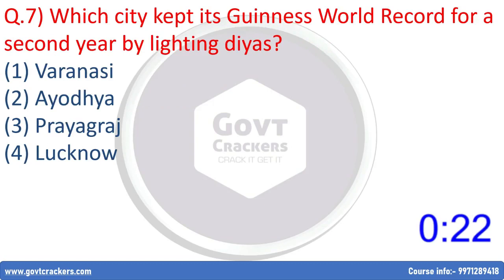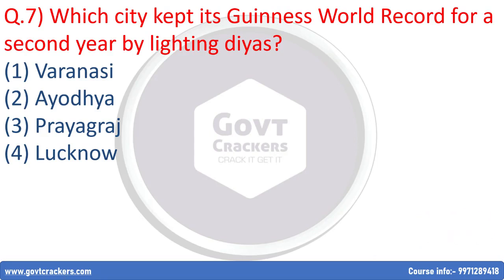Next question: Which city kept its Guinness World Record for the second year by lighting diyas? Option 1: Varanasi, Option 2: Ayodhya, Option 3: Prayagraj, Option 4: Lucknow. The answer is Ayodhya. The north Indian city of Ayodhya kept the Guinness World Record for the second year by lighting 6,65,569 oil lamps, known as diyas, and keeping them burning for at least 45 minutes as part of Deepawali celebrations.